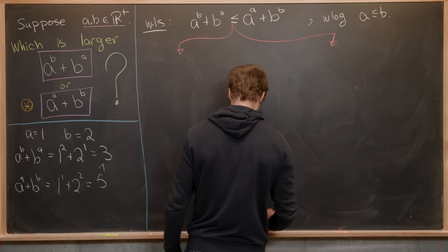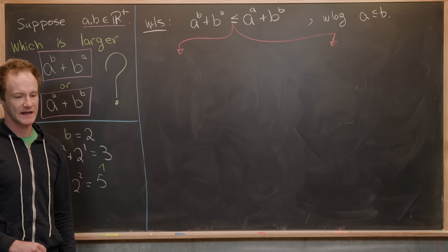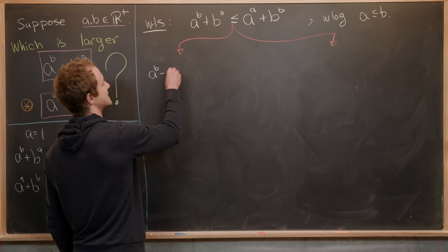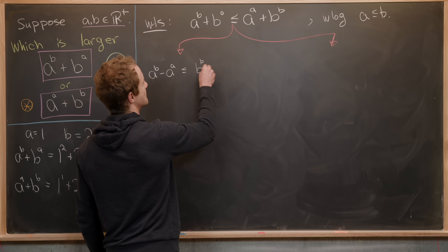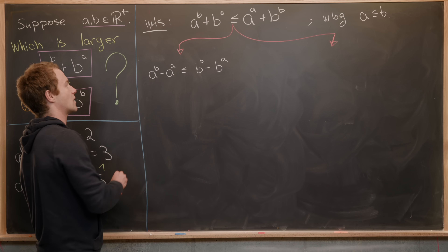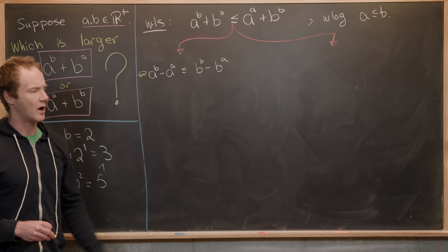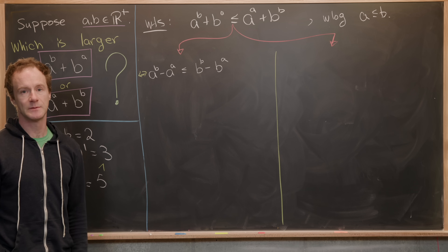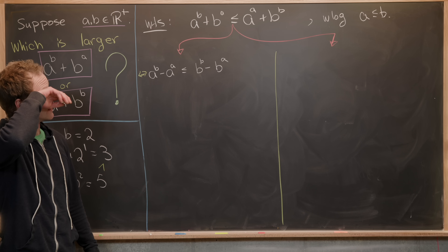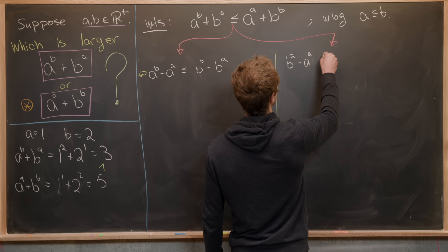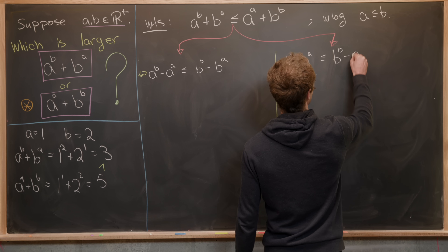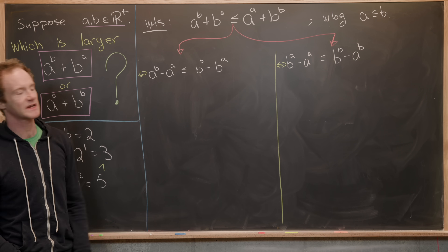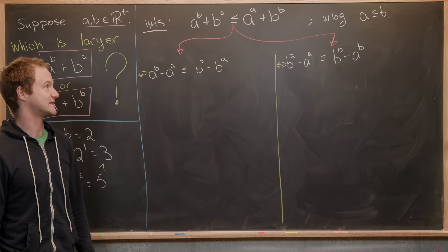On the left branch, we maintain the same base on both sides: A to the B minus A to the A is less than or equal to B to the B minus B to the A. On the right branch, we keep the exponent fixed: B to the A minus A to the A is less than or equal to B to the B minus A to the B. Both are equivalent to our goal inequality. Sometimes it's better to have the base fixed, sometimes the exponent fixed, depending on the size of A and B.